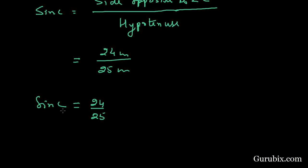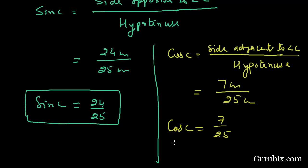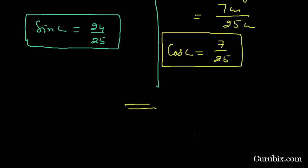Now for cos C, it would be side adjacent to angle C over hypotenuse. So here we have seven centimeter over 25 centimeters. This equals seven over 25. So cos C is seven over 25. This is the solution of the question, thank you.